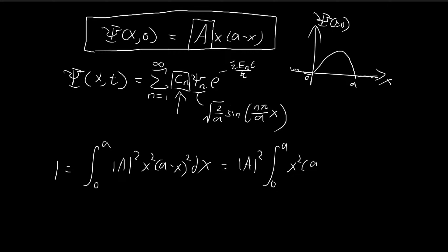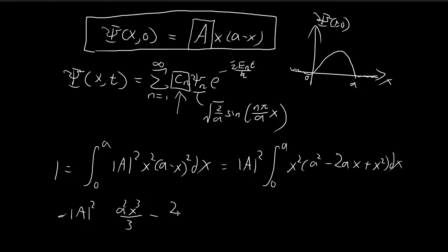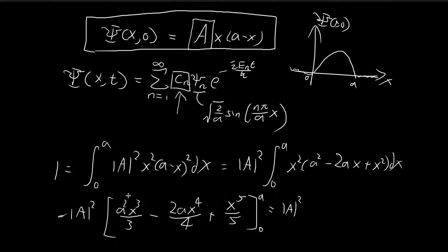This is actually a rather simple integral. We have |A|² times the integral of (a minus x)² dx, which expands to a²x² minus 2ax³ plus x⁴. Integrating term by term: a²x³/3 minus 2ax⁴/4 plus x⁵/5, evaluated from 0 to a. Each term has an a⁵ factor, giving us a⁵ times (1/3 minus 1/2 plus 1/5), which equals 1/30.